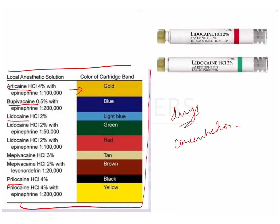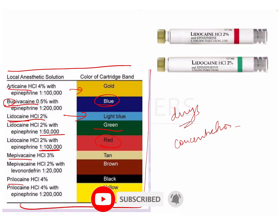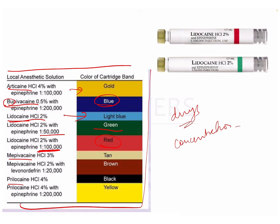Articaine is gold. Bupivacaine is blue. For lidocaine plain, it is light blue. As we go to 1:50,000 epinephrine concentration it is green, and 1:100,000 is red. I remembered it this way: 1:100,000 is a bigger number, meaning more concentration, so it's red — more dangerous — whereas 1:50,000 is green.